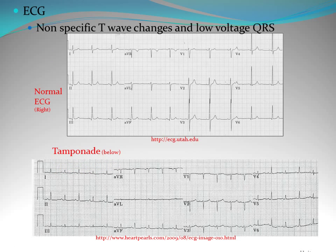Another diagnostic finding you might see with cardiac tamponade is nonspecific T-wave changes and low-voltage QRSs. You can see these are much greater voltage QRSs compared with the tamponade example, and the T-waves are flat versus normal. So it's something also to look for.